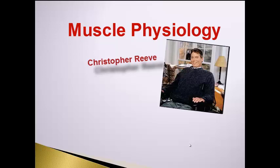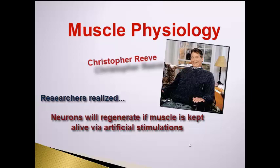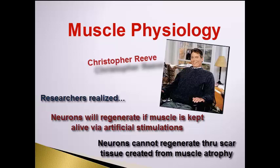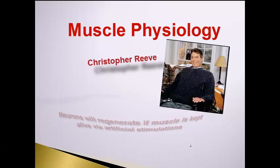He was told he would never have the sensation of touch again, and he allowed his body to become an experimental organism. They placed an electrical body suit on him with probes that would stimulate muscles in his arms and legs — with the intent to keep them healthy, maintain some posture, and keep them alive so they did not atrophy and become scar tissue. Scar tissue prevents nerves from growing through it, but by keeping his muscles electrically stimulated externally, they stayed alive long enough to allow nerves to grow back in. Before he died, he was able to feel sensations in the tips of his fingers.